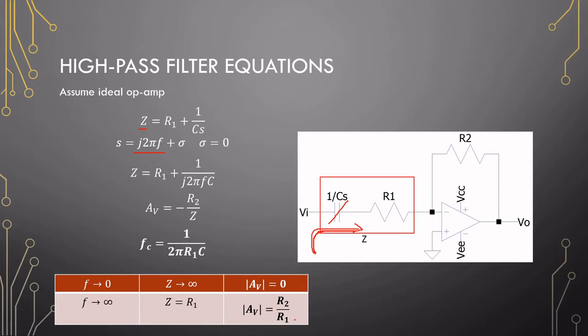This is the passband gain, and since this is a virtual ground over here, this capacitor and resistor are the only two components that interact with one another. R2 has no part in this, so we can just use the time constant, 1 over 2πR1C, to calculate the cutoff frequency on the input here.